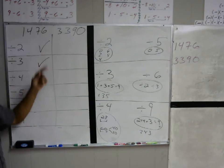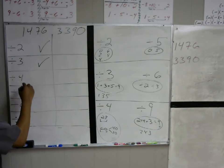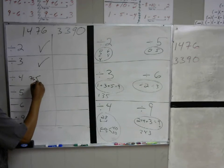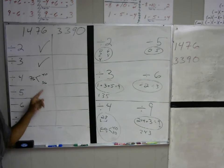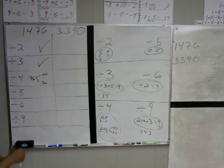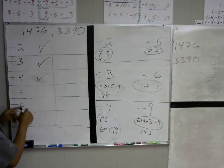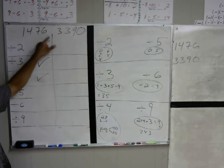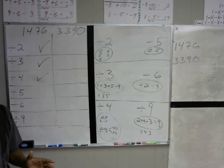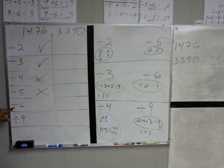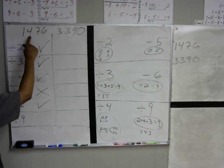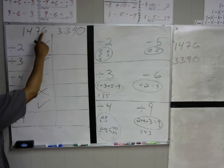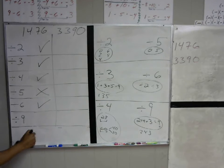Can 1476 be divided by 5? It has to end in a zero or five, and this ends in a six, so it can't be divided by 5. Can it be divided by 6? It can be divided by 2 and 3, therefore it can be divided by 6. Can it be divided by 9? 1 plus 4 is 5, plus 7 is 12, and 12 plus 6 is 18. 18 is in the nine times tables, so 1476 can be divided by 9.